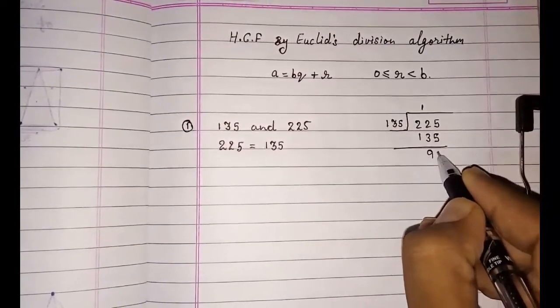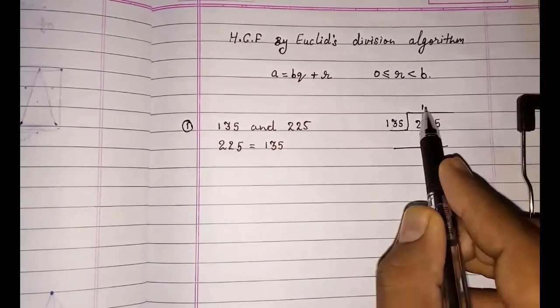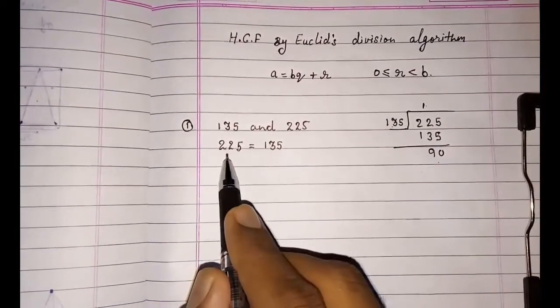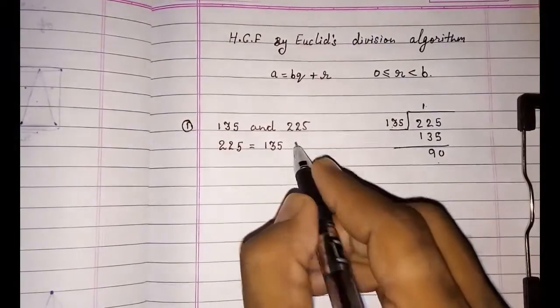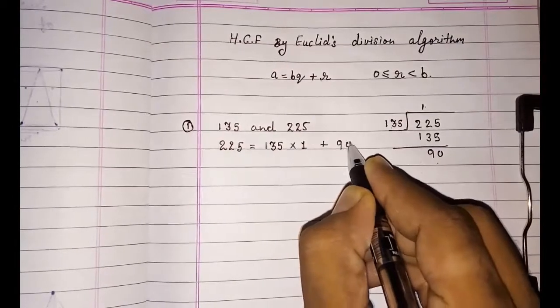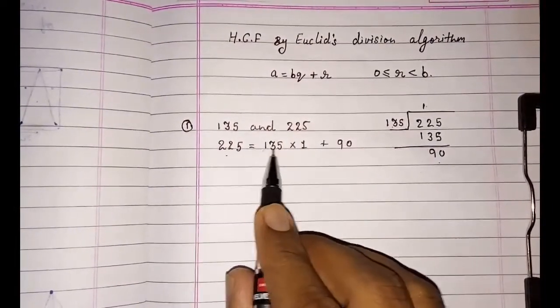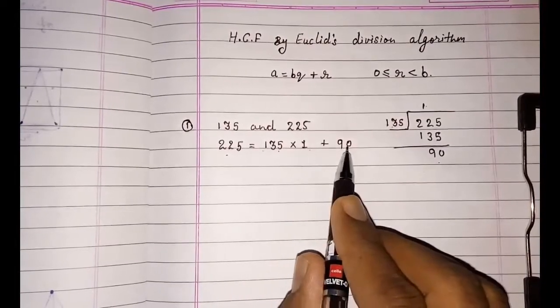And the remainder will be 90. So this is a, this is b, this is q, and this is r. a = b × q + r. This is Euclid's division lemma.